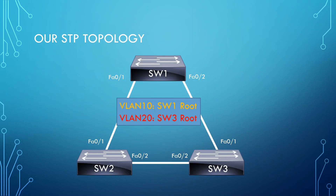This is the STP topology we're going to work with. Switch 1, I want to configure as the root bridge for VLAN 10. Switch 3, the root bridge for VLAN 20. Switch 2, I want to configure as the secondary for either VLAN. By having Switch 1 as the root bridge for VLAN 10, we'll utilize those two links. By having Switch 3 as root for VLAN 20, we'll utilize that additional link - so we can load balance traffic over all redundant links. I'm going to pause the video and next time you see my screen I'll be at the command line interface of the Cisco switch.